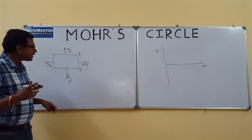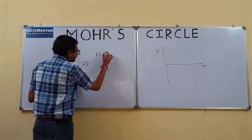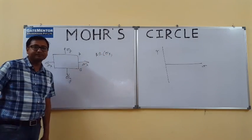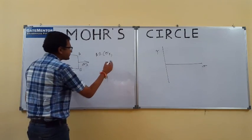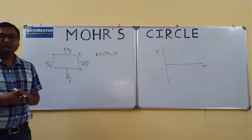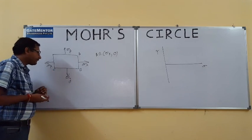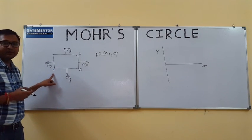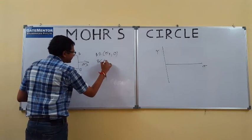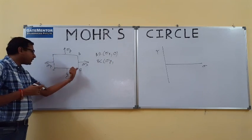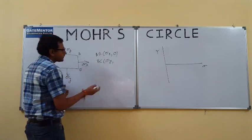On plane AB, the normal stress acting is sigma x, and there is no shear stress on this plane — shear stress is zero. Similarly, on plane BC, the normal stress acting is sigma y, and again there is no shear stress on plane BC — shear stress is zero.